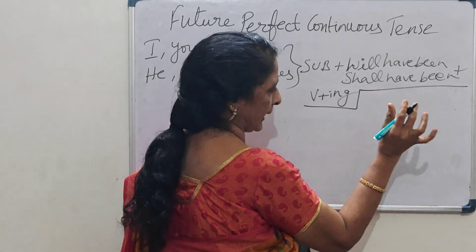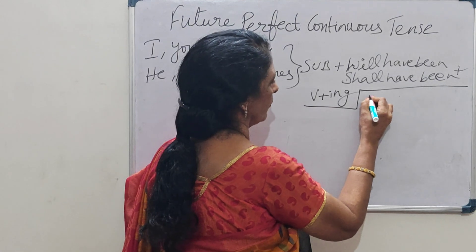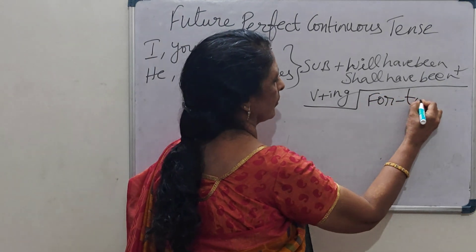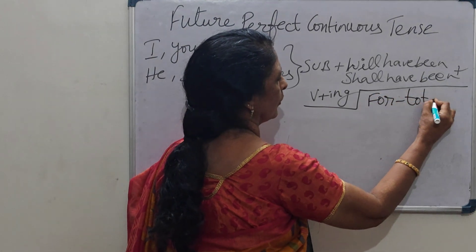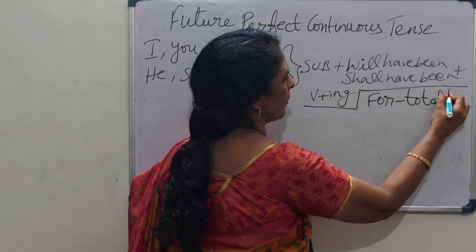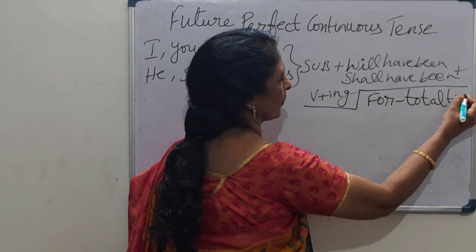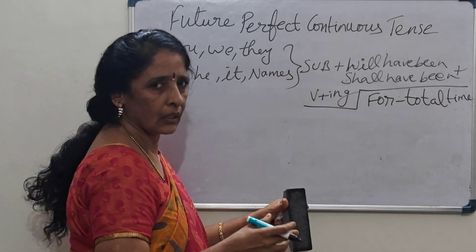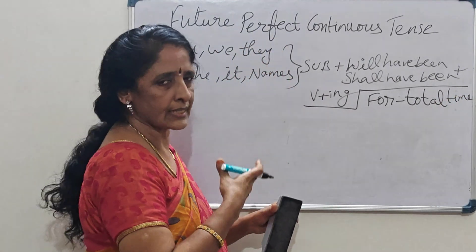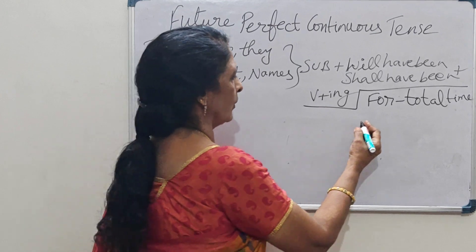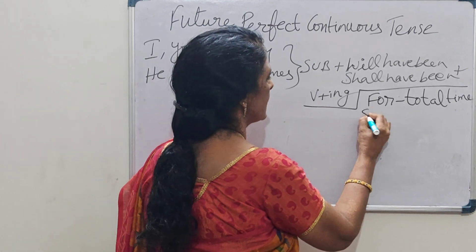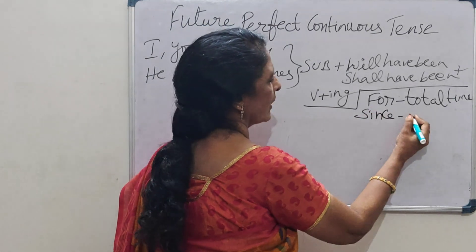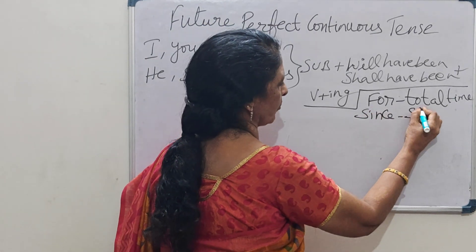Now for the time expressions: if you are using total time in a sentence, we have to use 'for.' If you are using starting time in a sentence, you have to use 'since.' 'Since' is for starting time.